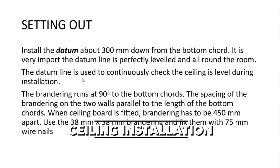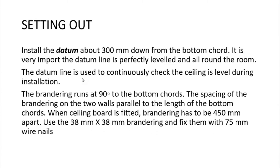For setting out, install the datum line 300 millimeters down from the bottom cord. It is very important that the datum line is perfectly level all around the room. The datum line is used to continuously check if the ceiling is level during installation. The brandering runs at 90 degrees to the bottom cords, with spacing of 450 millimeters apart. Use 38 by 38 brandering fixed with 75 millimeter wire nails, the same as three-inch wire nails.